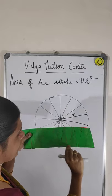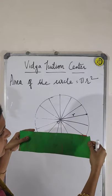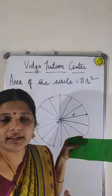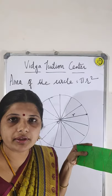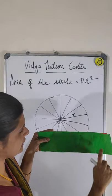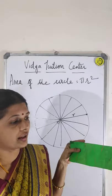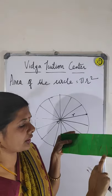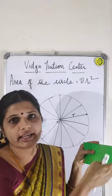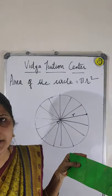This is the base, and this is the height. What is the area of the parallelogram, guys? Base into height. So this is the base and this is the height. If I want to find base into height, that is the area of the circle. Am I right?